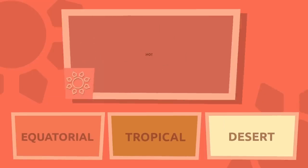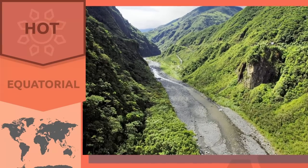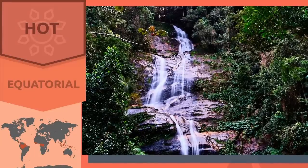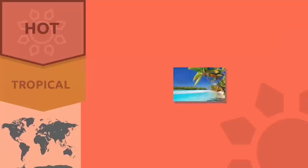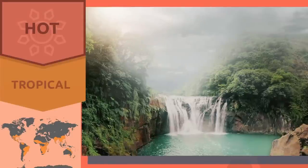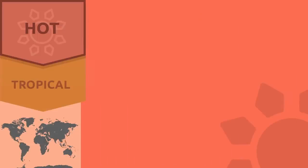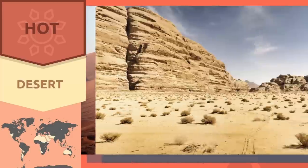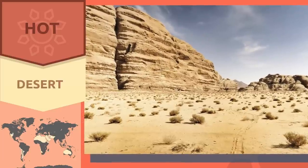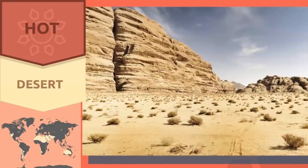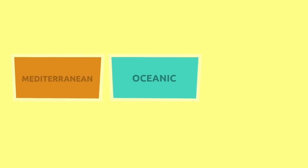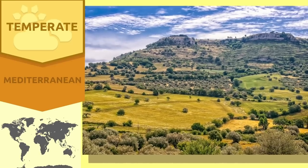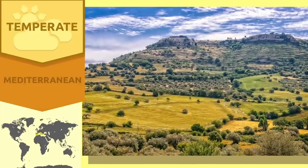The equatorial, tropical, and desert climates are hot climates. Countries near the equator have an equatorial climate, characterized by being hot and humid with heavy precipitation and a mild average temperature of around 77 degrees Fahrenheit. The tropical climate, found near the tropics, is hot and humid with heavy rainfall during summer. The desert climate — found in places like the Sahara Desert, the Arabian Desert, or parts of Australia — is characterized by being very hot and dry with very scarce precipitation.